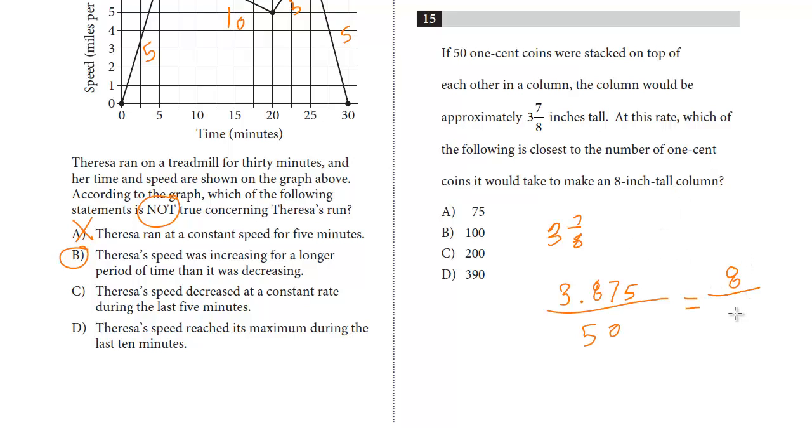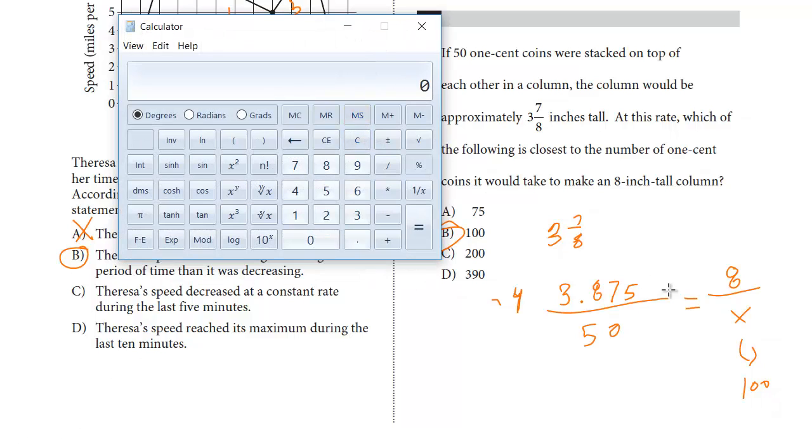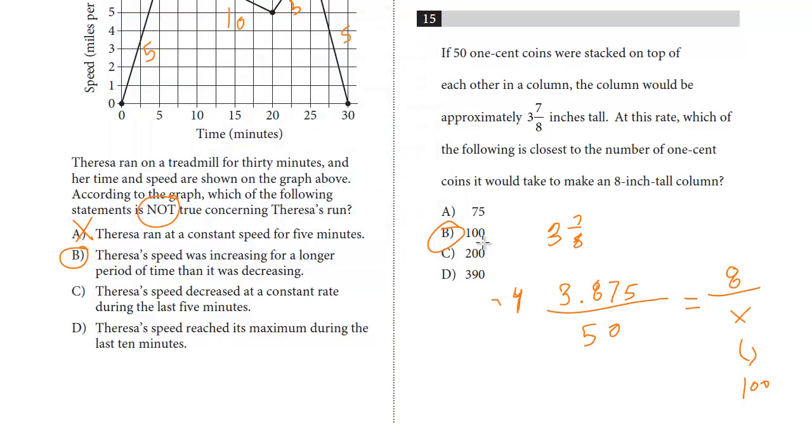So you set this up, you just have to be consistent. On the top is the height. The bottom is the coins. You could flip it as long as you're consistent across. I would just look at this and say, well, this number is pretty close to 4 and it's 50. And this number is 8, which is double 4. You could see this is going to be 100. It's just the closest. Obviously, this is going to be the answer. You could use your calculator, and you could do 50 times 8 divided by 3.875. It's going to be a little bit more than 100. We're just trying to find the closest one to it, and the answer here is B.